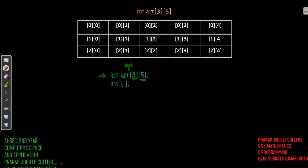The first loop will run from i equal to zero, i less than three, i plus plus. That means i is representing the rows — i is representing this value of every index.